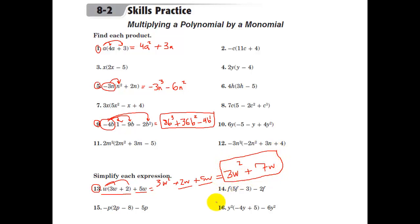And final example here, I guess we'll just do number 15. Distribute the negative p in here and here and you get negative 2p squared because negative p times 2 is negative 2 and p times p is p squared. Negative p times negative 8 is positive 8p. Remember that if you have a negative, it's like negative 1. Then we have a minus 5p at the back here, minus 5p at the back.